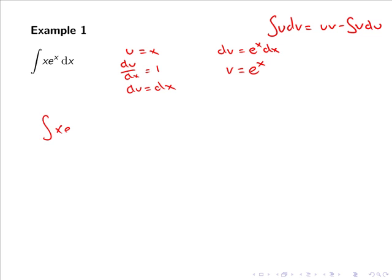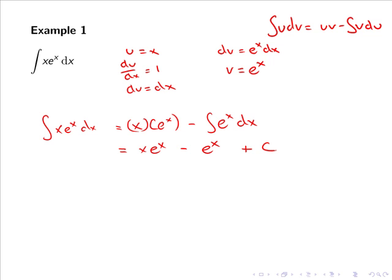So the integral of x e to the x dx equals u times v, so x multiplied by e to the x, minus the integral of v so e to the x multiplied by du which is dx. Tidying this up, we have x e to the x, and integrating e to the x we simply get e to the x, so minus e to the x plus c. We can go one step further and take a common factor of e to the x, giving e to the x times (x minus 1) plus c.